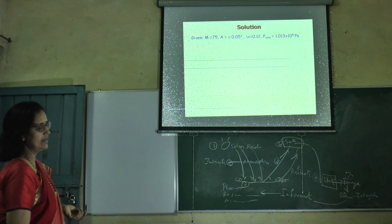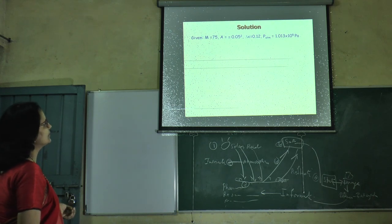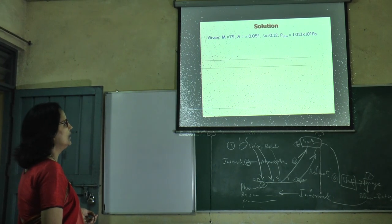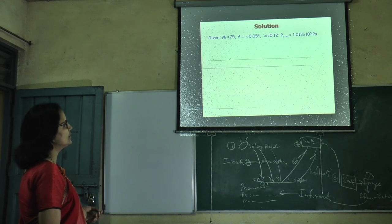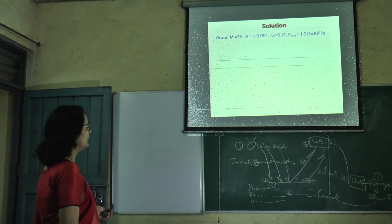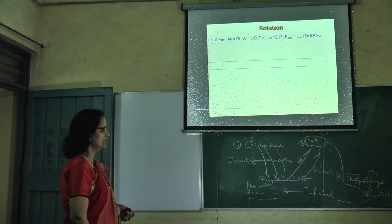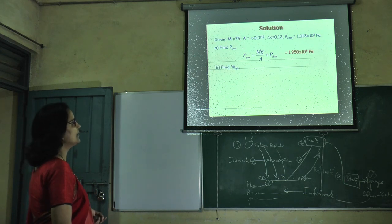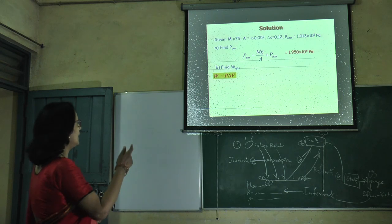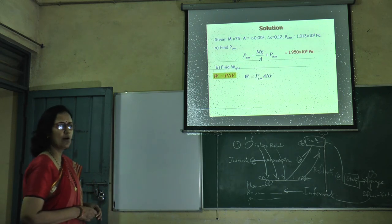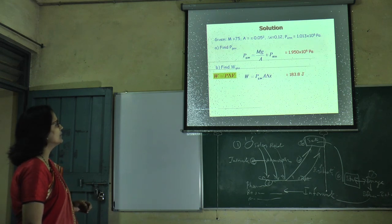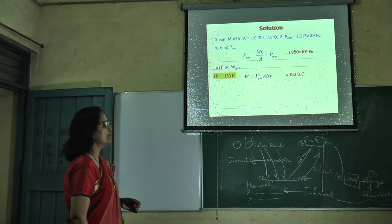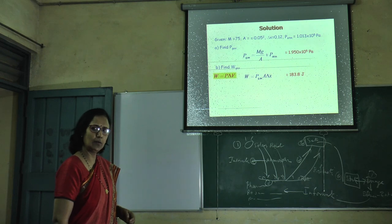For the solution of previous example, if mass m is 75, area A is 5.05 square meter, and atmospheric pressure is 1.013 times 10 to the power 5 Pascal, then we know how much heat is converted into work. We find the pressure of the gas by Mg divided by A plus P atmosphere. To find the work done in gas state, we calculate work done equals to P delta V. Work done is positive as well as negative. Positive work is work done on the system by surrounding and negative work is vice versa.